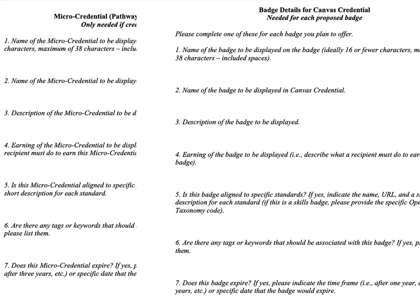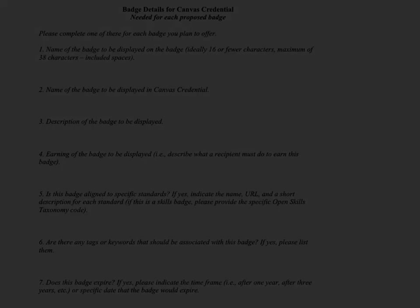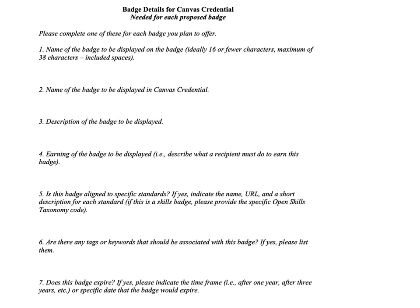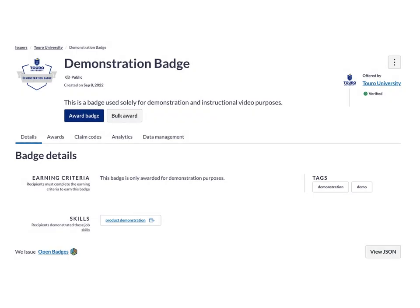If you look at them, they are basically asking the same information for each of them. For the purposes of this video we will just look at the badge details for Canvas Credential, although the same seven questions appear on both forms. The information being requested is to allow us to create the actual badge in Canvas Credential.